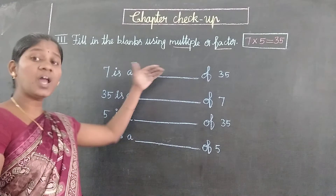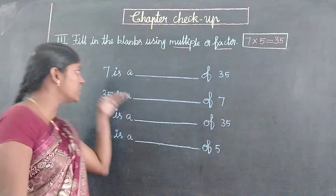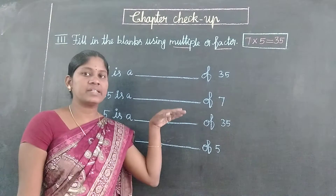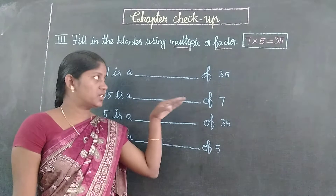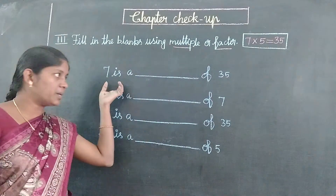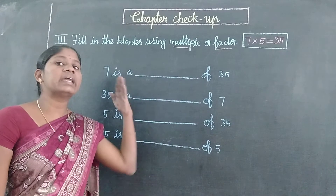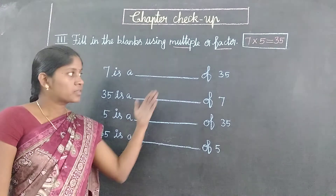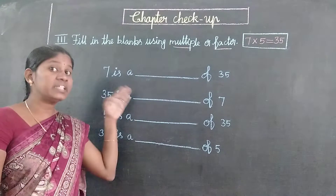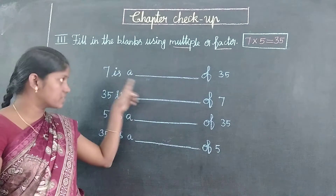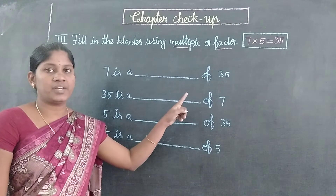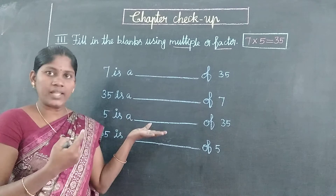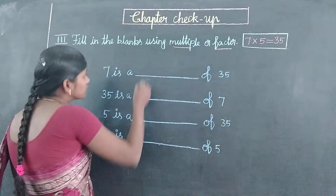The first one: 7 is a dash of 35. 7 is a number, and 35 is a number. Multiple or factor? 35 is a number of factors. So, the answer is factor.